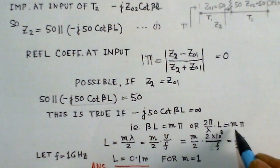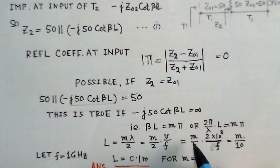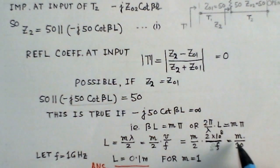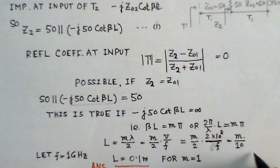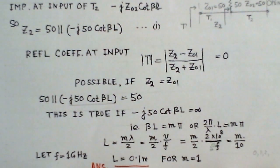Since β = 2π/λ, we have (2π/λ)·L = Mπ, giving L = M·λ/2. Writing λ = v/f, we get L = M·v/(2f). With phase velocity v = 2×10⁸ m/s and frequency f = 1 GHz, substituting gives L = M/10. Taking M = 1, the length L = 0.1 meters. So the unknown line length is 0.1 meters at 1 GHz.